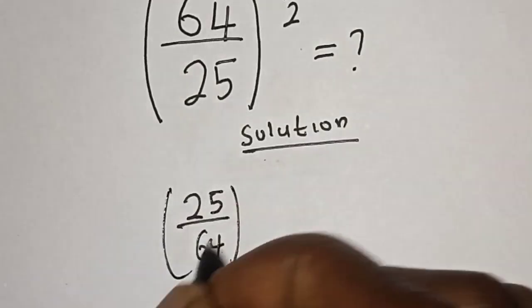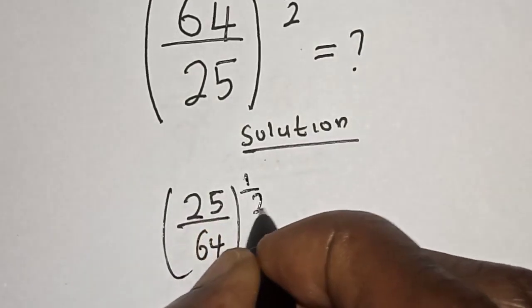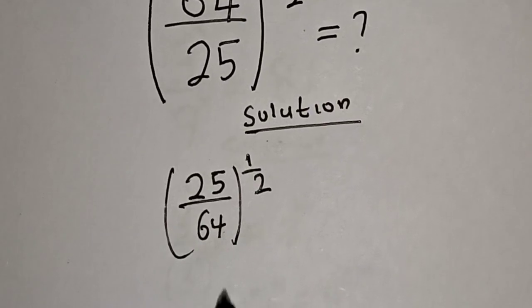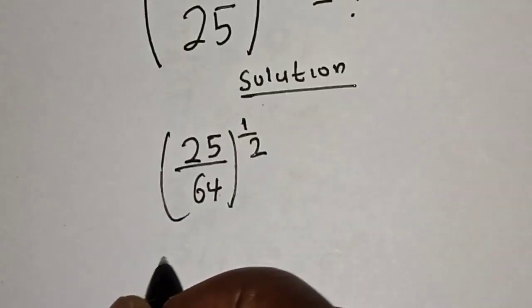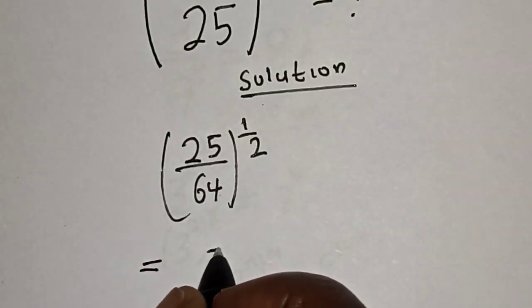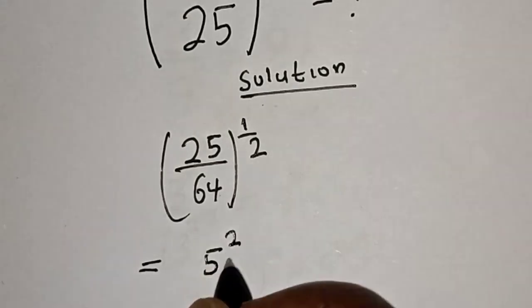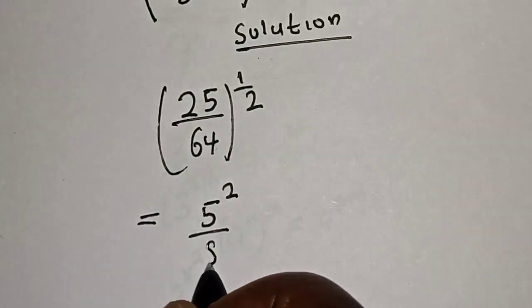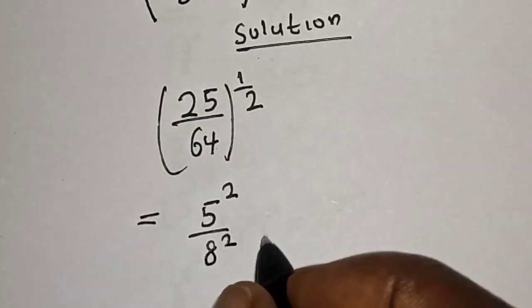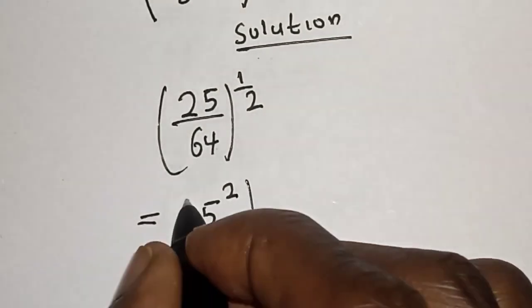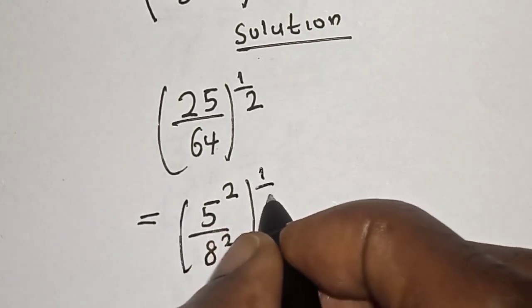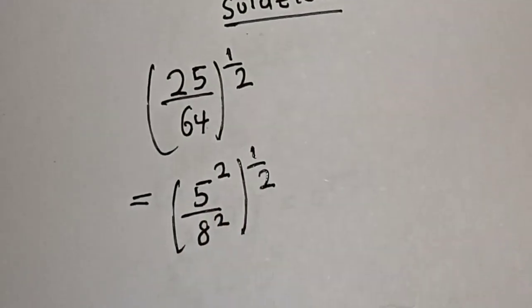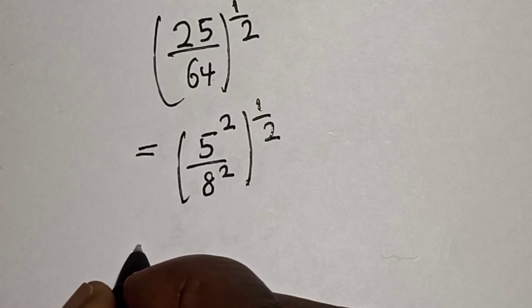Then 25 is 5 squared, divided by 64 which is 8 squared, all raised to the power of 1 over 2. Now take note of this rule: